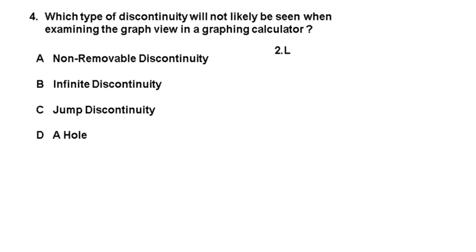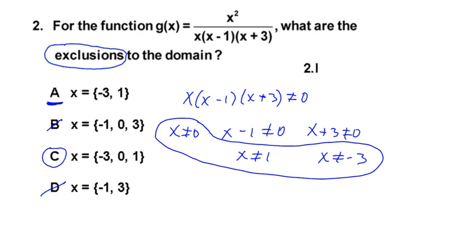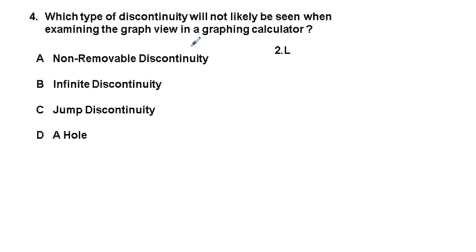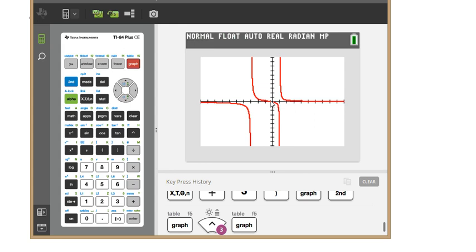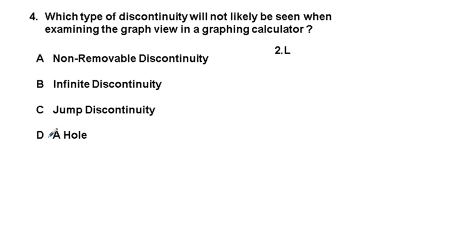Problem 4: Which type of discontinuity will not likely be seen when examining a graph view in a graphing calculator? We had a perfect example in problem 2. Looking back at that graph, the infinite discontinuities and non-removable discontinuities at x = −3 and x = 1 appeared as vertical asymptotes, but at x = 0 we had a removable discontinuity — a hole or point discontinuity — which makes D our correct answer.